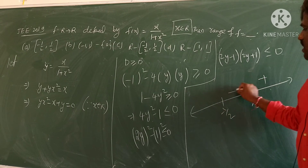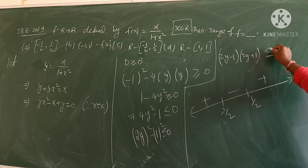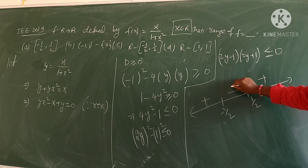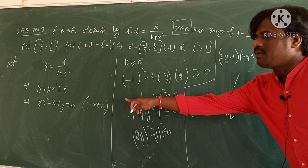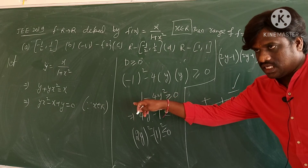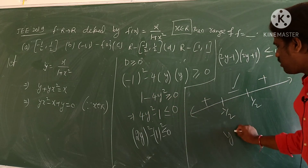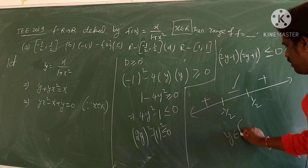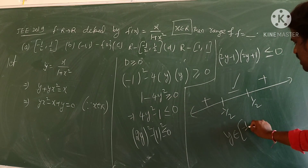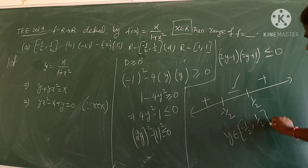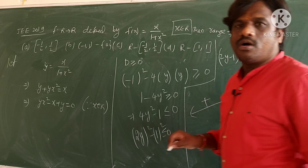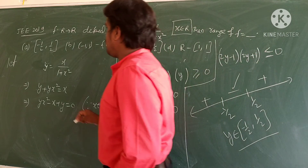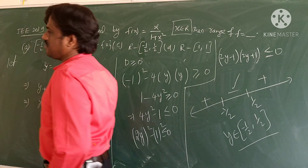The wavy curve gives signs: plus, minus, plus around the roots -1/2 and 1/2. Since we need ≤ 0, the answer is the negative region: y ∈ [-1/2, 1/2]. So the range of the function is [-1/2, 1/2], and option A is the right answer.